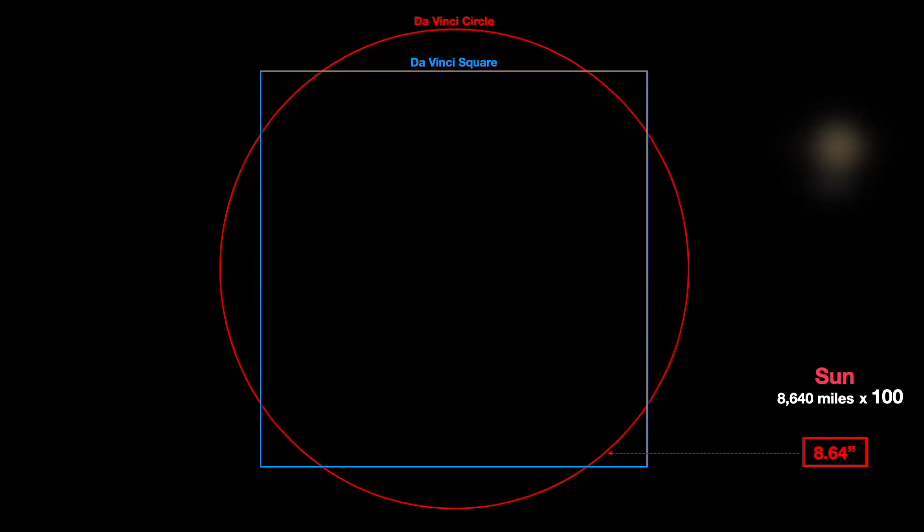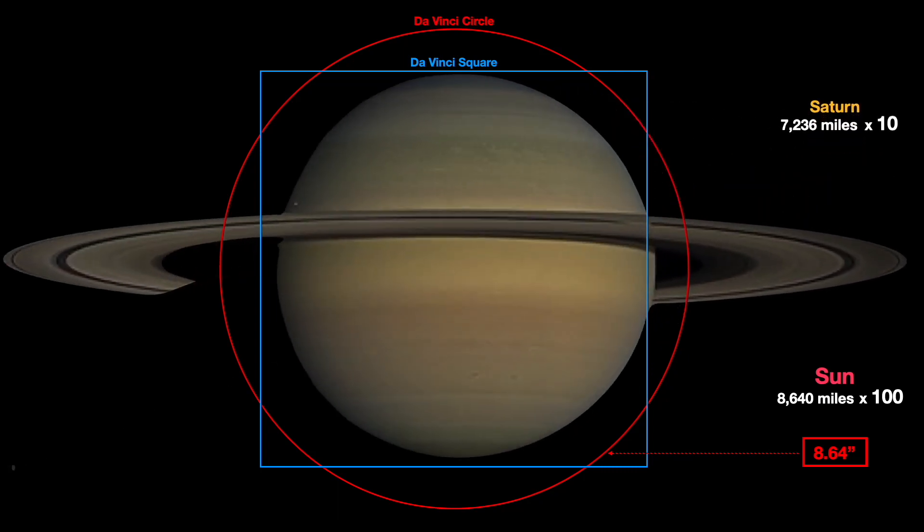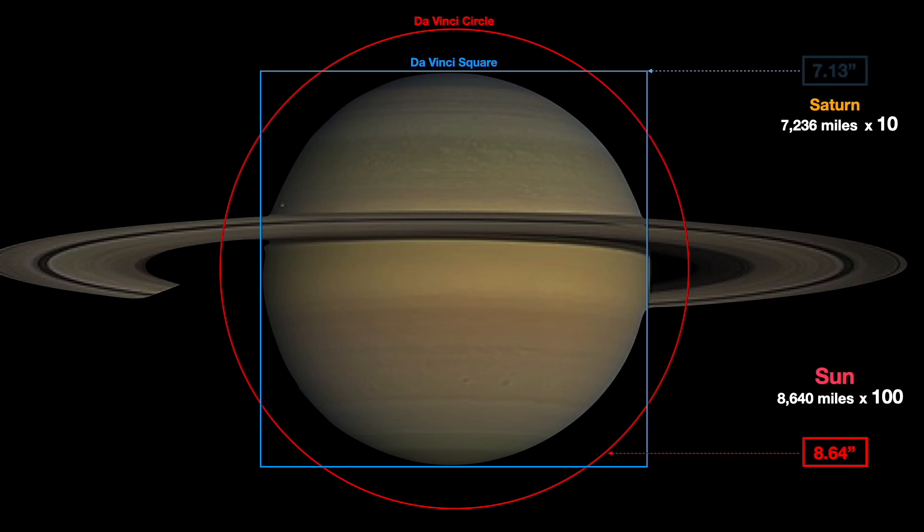Taking this one step further, if one inscribes a circle within the da Vinci square, it seems to match Saturn's diameter almost perfectly at 7.13 inches.